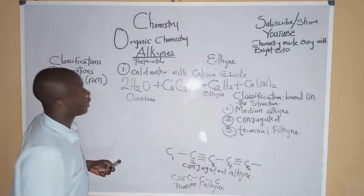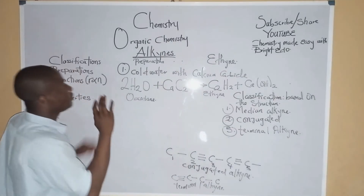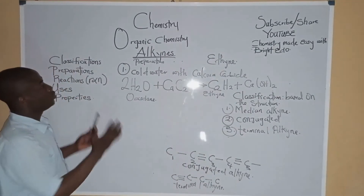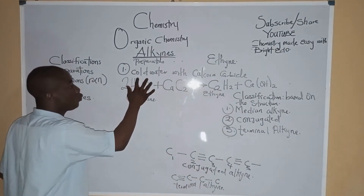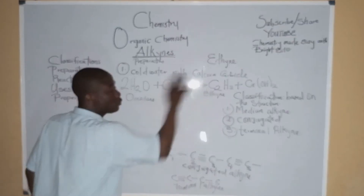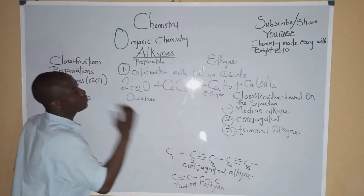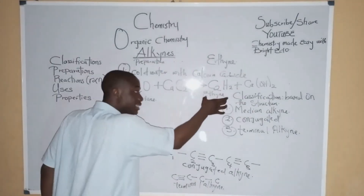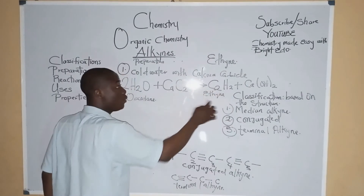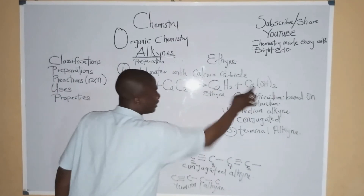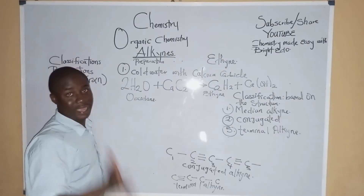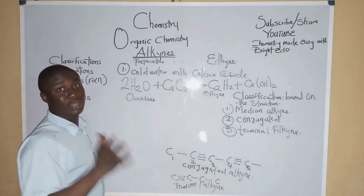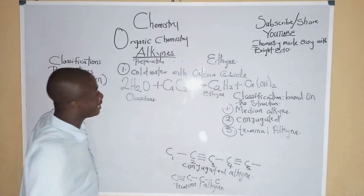So to prepare alkynes, we react cold water with calcium carbide and we get the first member, acetylene, plus calcium hydroxide — also called slaked lime.